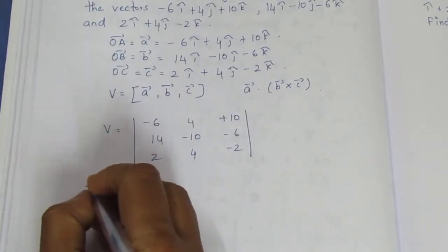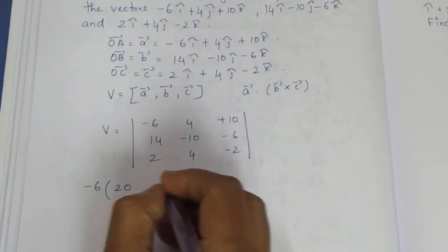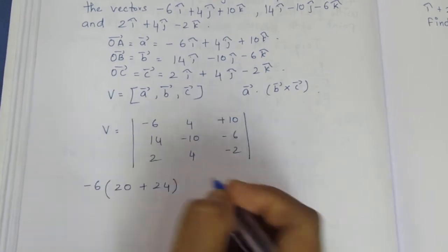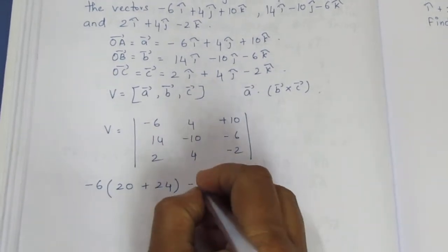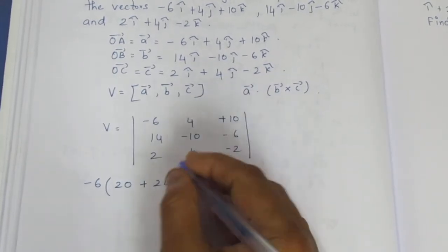So minus 6 into... row and column multiply, so 20 minus 24... Now minus 4, this is one row, this is one column, this is two multiply, so minus 28 plus 12.